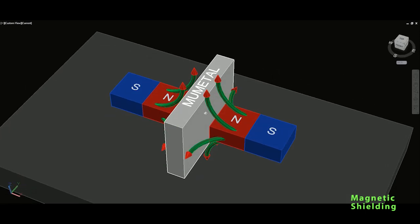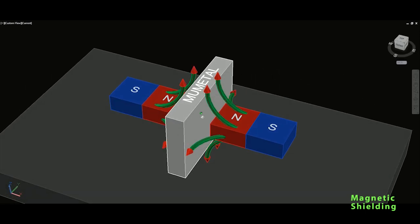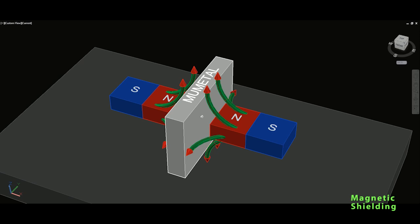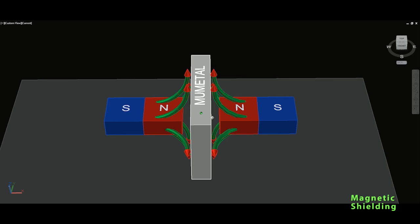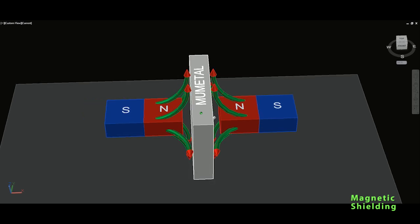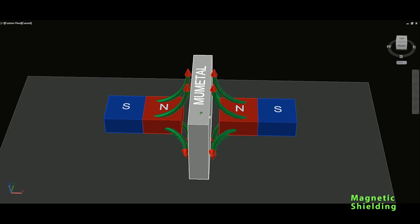So what is permeability? They say mu metal has high permeability. Permeability is degree of magnetization a material obtains in response to applied magnetic field and this is measured in Henrys per meter. So this is the permeability.